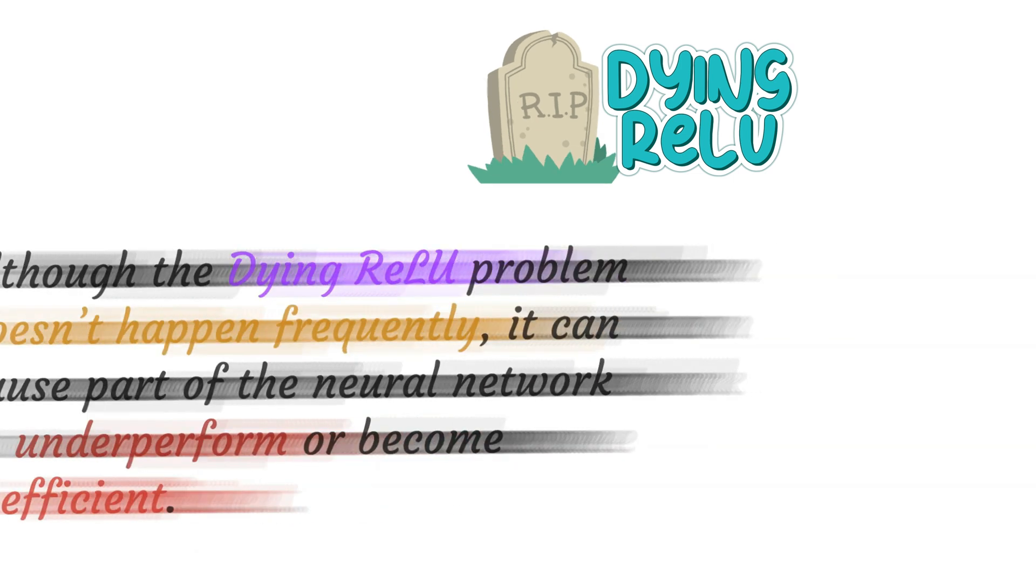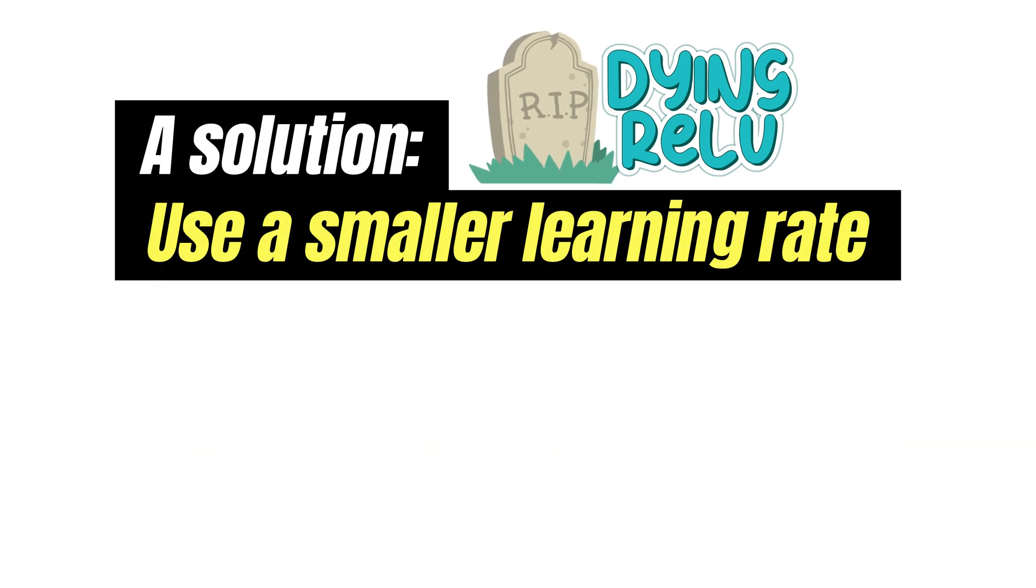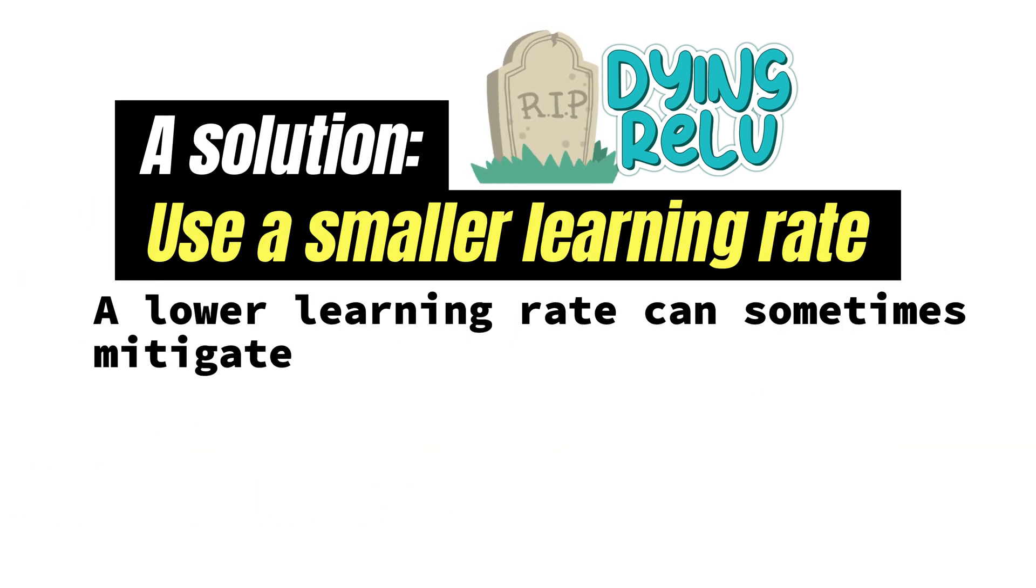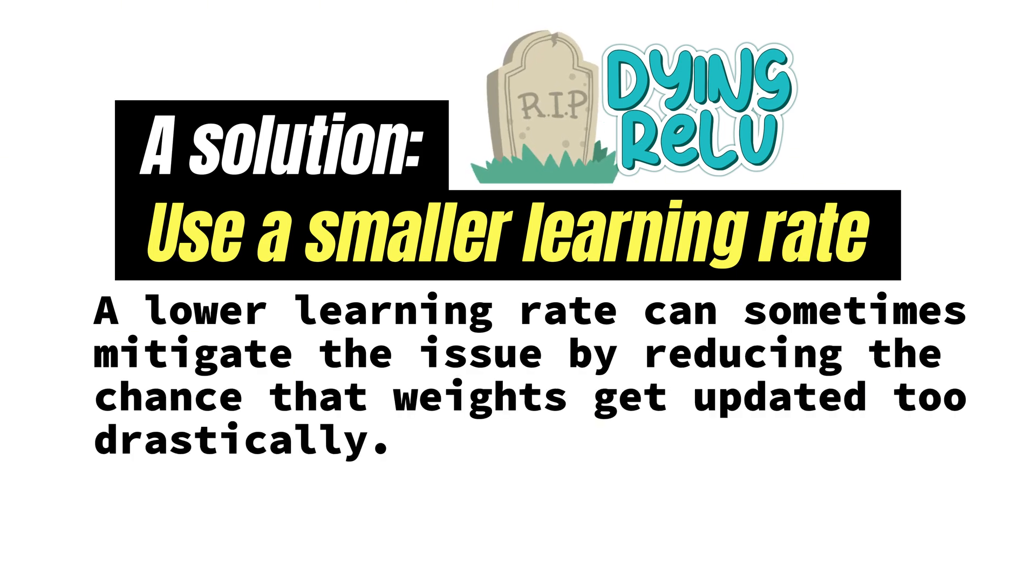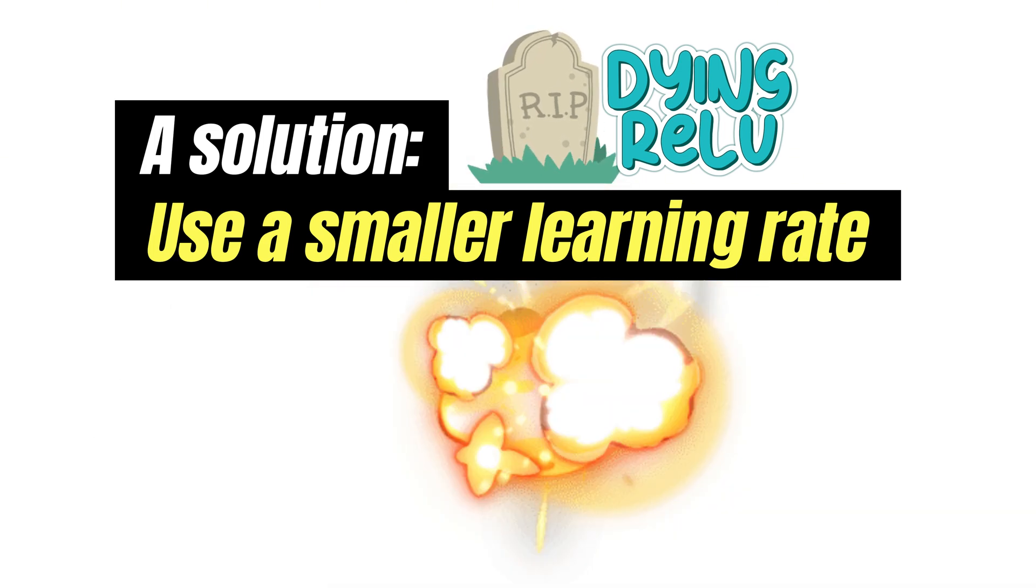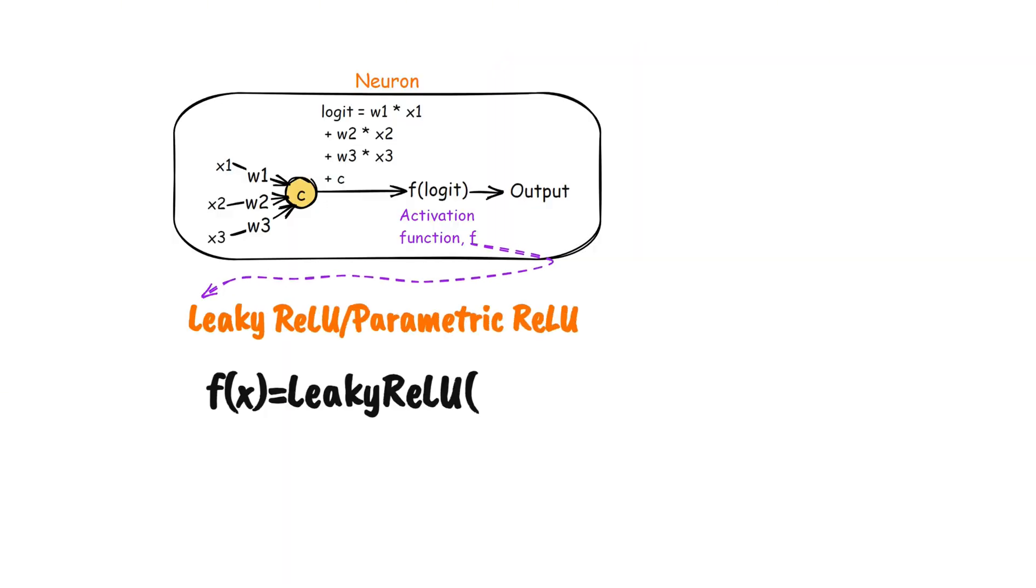One solution is to use a smaller learning rate. A smaller learning rate can sometimes mitigate the issue by reducing the chance that weights get updated too drastically, which could lead to neuron death. A more standard solution to the dying ReLU problem is leaky ReLU or parametric ReLU.